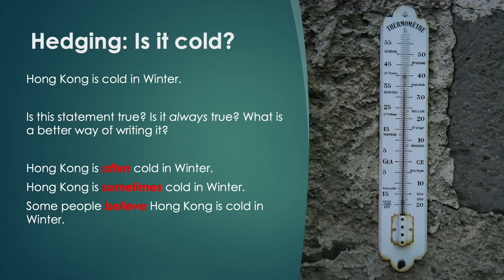The words in red are hedging language. They are very common in academic writing. The first two — often and sometimes — are adverbs. They help us modify our writing. When something is not 100% true, we can use these words so that someone cannot say your statement is wrong.